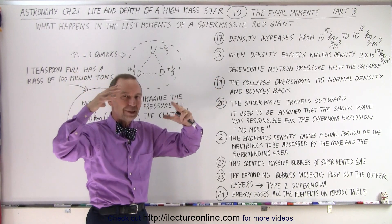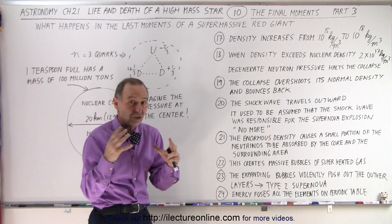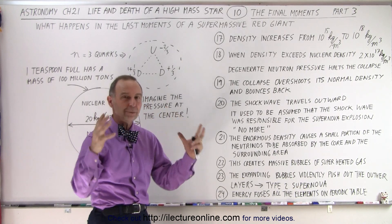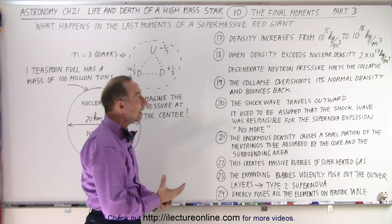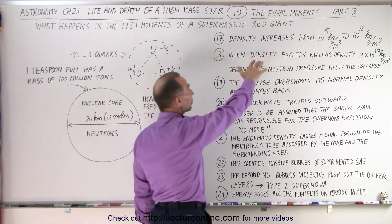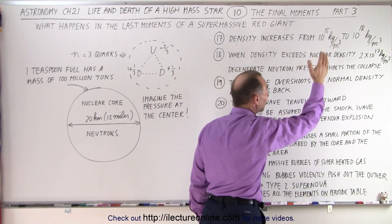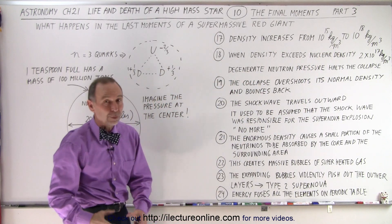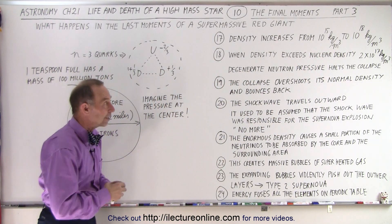As we remember, the core is collapsing, the density is increasing, the electron degeneracy can no longer stop it, the core is now filled primarily with neutrons, and you can see that the density increases from 10 to the 15 to 10 to the 18 kilograms per cubic meter.